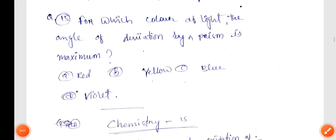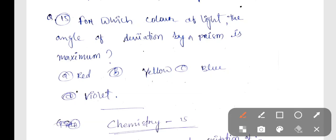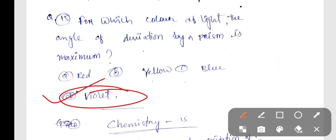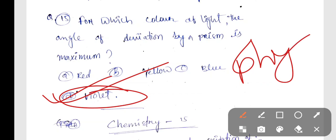For which color of light the angle of deviation by a prism is maximum? The correct answer is Violet, Option B is correct. That finishes physics. Next is Chemistry.